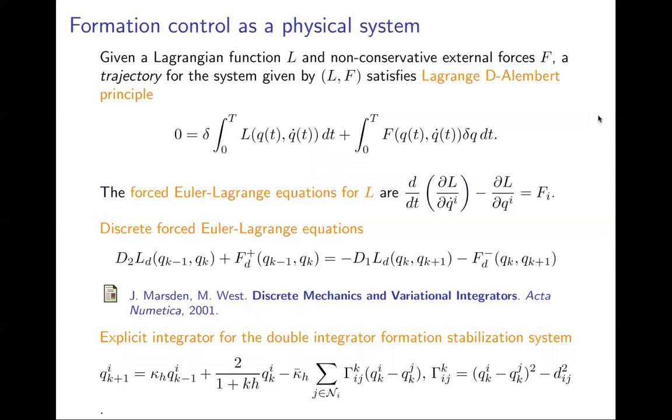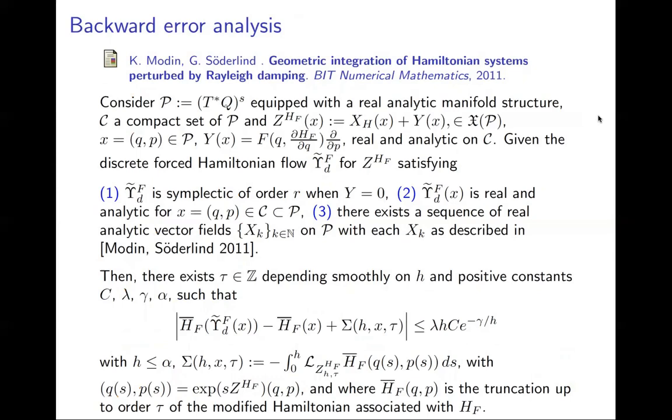In addition, since the forced Lagrangian system is hyperregular, one can construct the corresponding discrete forced Hamiltonian flow and employ results on backward error analysis. For instance, the one in this paper applied to our problem provides a lower bound depending on the time step h for the rate of energy dissipated along the motion.